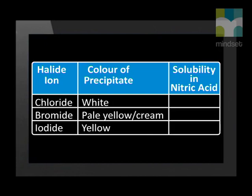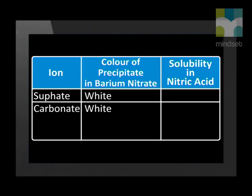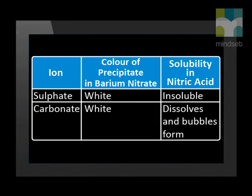This may all seem overwhelming, but we can summarize our findings into two tables to make it easier to understand. When we test halide ions with silver nitrate, they all form precipitates but of different colors: chloride ions form a white precipitate, bromide ions form a pale yellow or cream precipitate, and iodide ions form a yellow precipitate. All the halide ion precipitates are insoluble in nitric acid. For sulfate and carbonate ions, both form a white precipitate when reacted with barium nitrate. However, only sulfate ions are insoluble in nitric acid — carbonate ions dissolve in nitric acid. Remember that all these reactions are examples of ion exchange reactions where both ions in the two ionic solutions swap, so we say that double displacement has occurred.